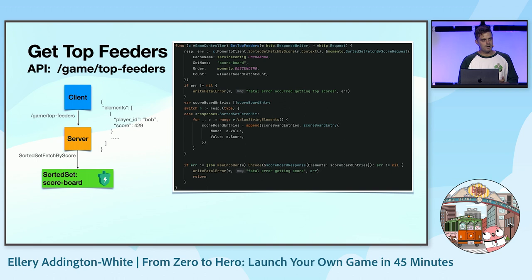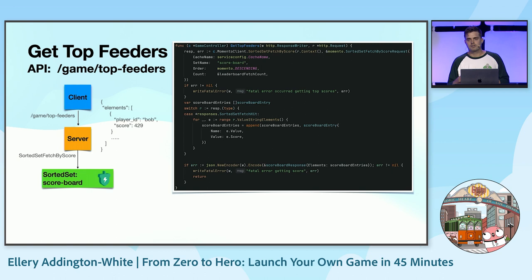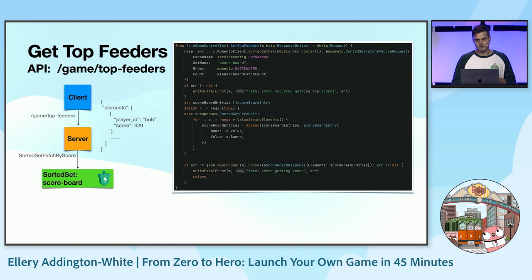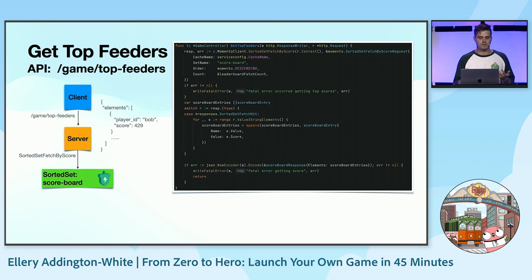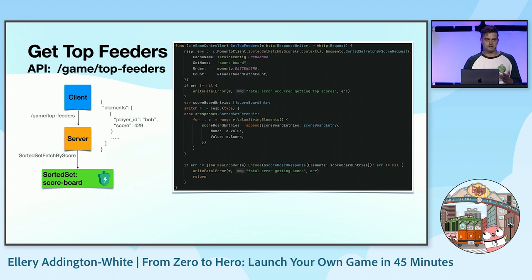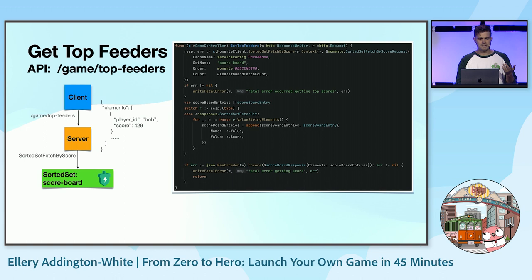The next API is the one that actually powers the leaderboard. We have a top feeders API request come in, and we fetch that same scoreboard sorted set, asking for members by score in descending order, top 100. That returns a list of members and their scores — we loop through that, build up a JSON response, and return it to our client. That's all we needed to implement a leaderboard. Not very much code, really easy to get going, and a very powerful concept applicable to lots of different applications.